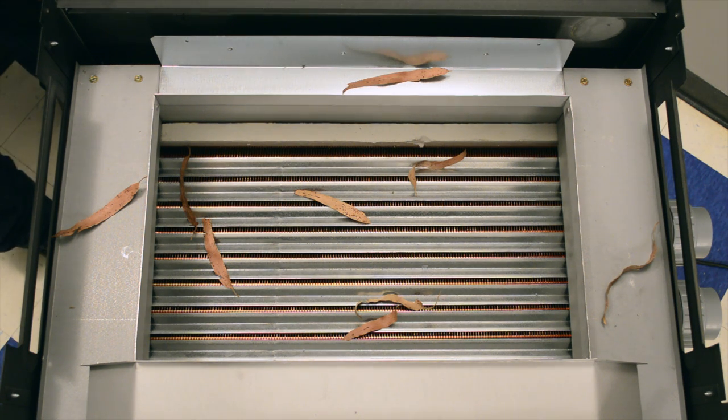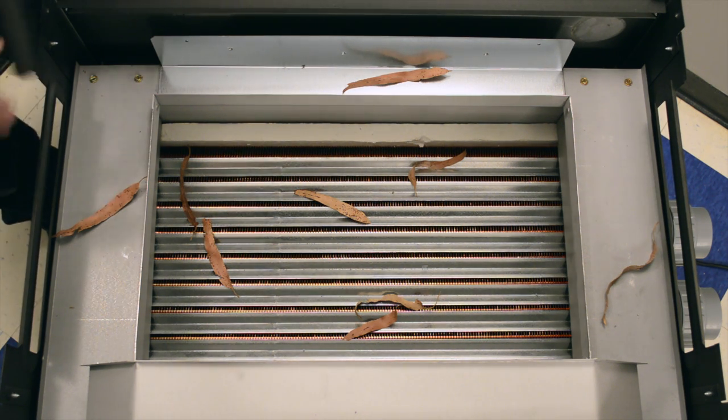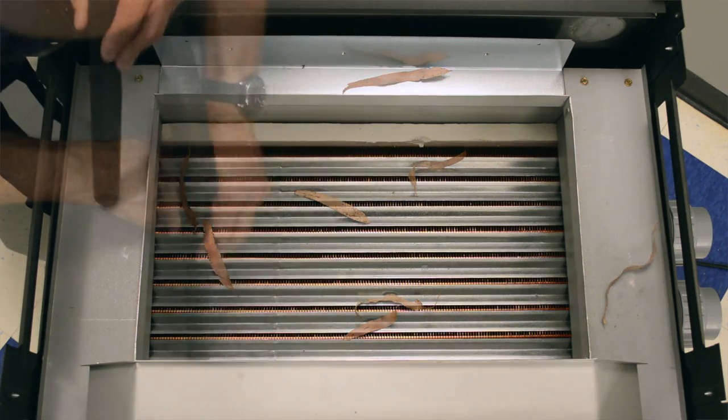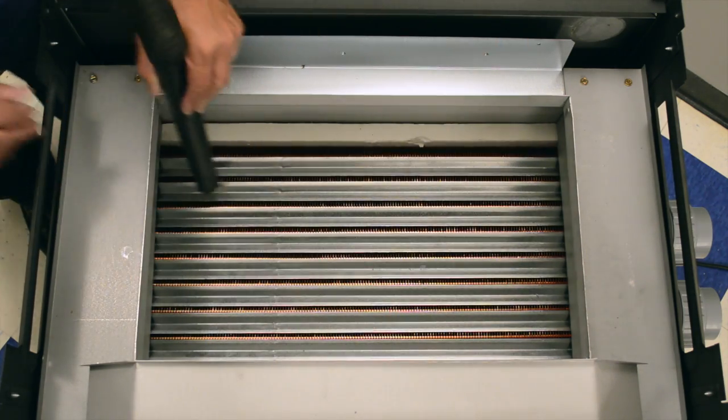Inspect the rain channel and top of the heat exchanger for any debris. With your industrial vacuum, remove any leaves or debris you find.